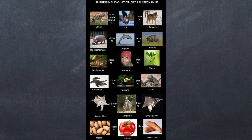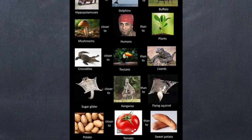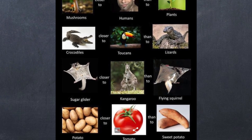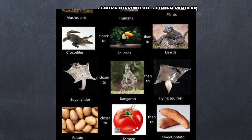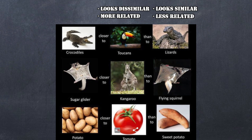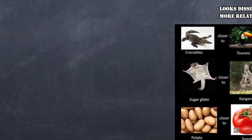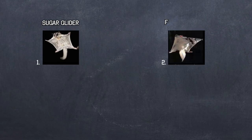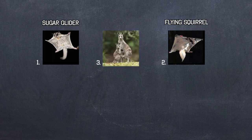Recently, I came across this picture demonstrating that evolutionary relationships are not based on phenotypic or visual similarities. Species 1, while similar in appearance to species 2, is actually more related to species 3, even though they look nothing alike.